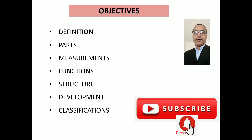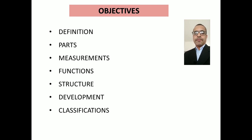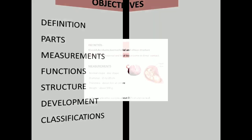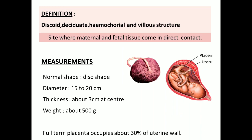In this video we will cover the definition for the placenta, various parts, measurements, functions, structure and development, and various types of placenta. By definition, the placenta is discoid, decidua, hemochorial, and villous structure. These terms denote the physical appearance and properties of the placenta.